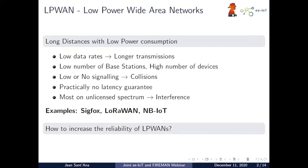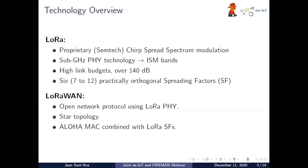The main question for today is: how to increase the reliability of LPWANs? I'll now talk about LoRa and LoRaWAN, which we use as a use case for numerical results because it was better adopted by the research community. LoRa is a proprietary chirp spread spectrum modulation owned by Semtech. It works on sub-gigahertz ISM bands, and usually has high link budgets over 140 dB, depending on some parameters of the technology.